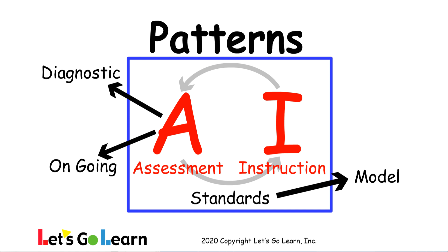Diagnostic information is important, but it doesn't end there. So we get our diagnostic information, we can make some initial decisions about instruction, and then we implement those. As we're implementing them, we're collecting additional information about what students can do — that is, the information related to how they adapted or dealt with the instruction. That's called ongoing assessment, and it's very important. With diagnostic assessment, we're only beginning to get a sense of what students can do. Reading is a complex set of behaviors, and it's going to take us some time. So it's a starting point — we may have to adjust and adapt as we get more information.